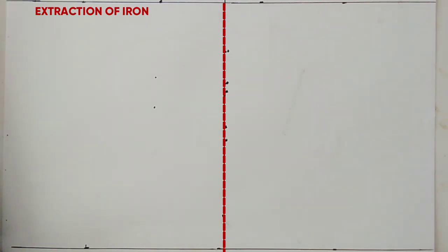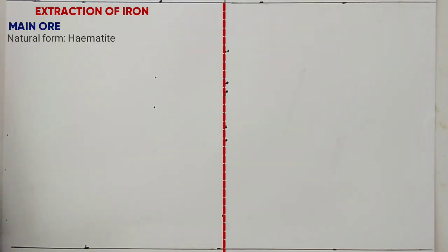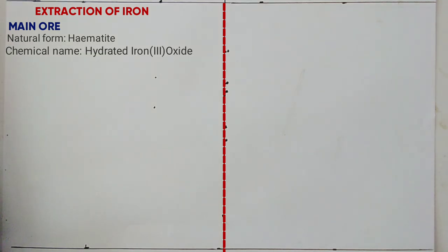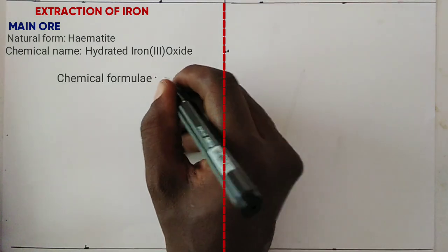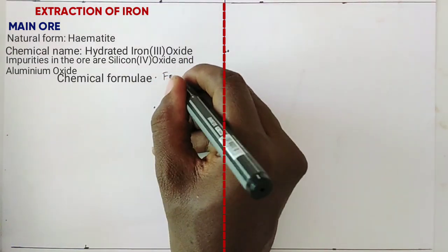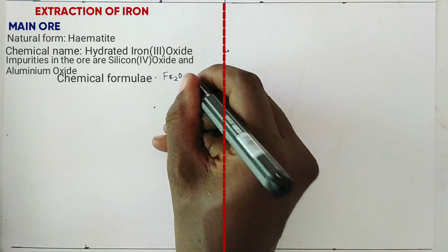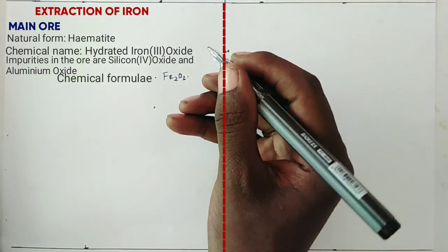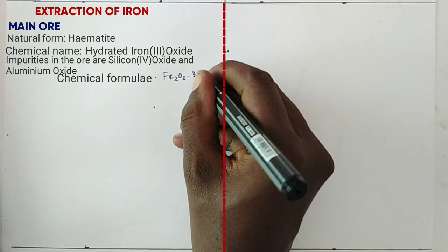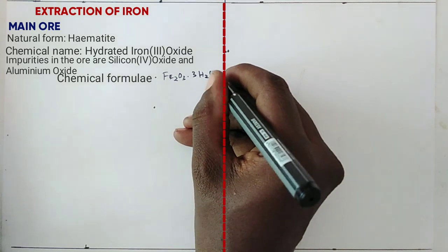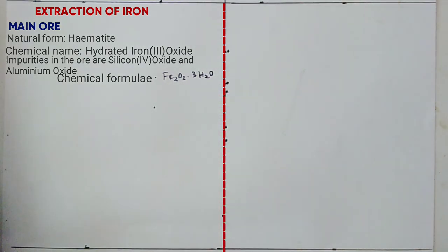The main ore for extraction of iron in its natural form is called haematite. The chemical name is hydrated iron(III) oxide. That is the chemical name of hydrated iron(III) oxide.